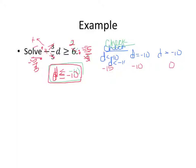Negative 3 fifths times negative 15 is greater than or equal to 6 — that becomes positive 9 greater than or equal to 6. True. Then negative 3 fifths times negative 10 gives us positive 6. Is 6 greater than or equal to 6? That's also true since it has the equal to part.